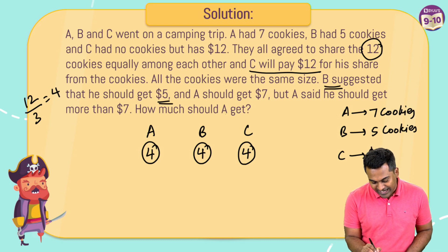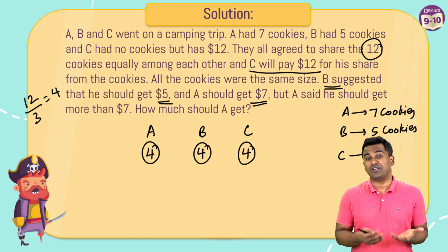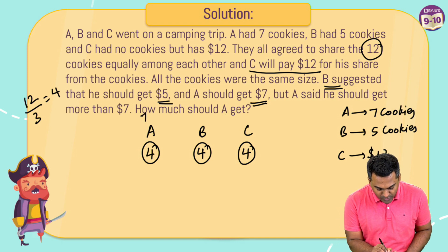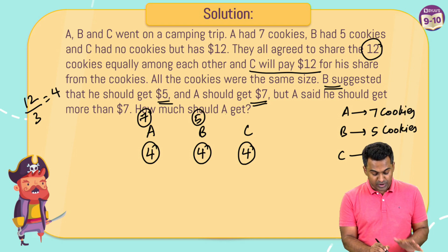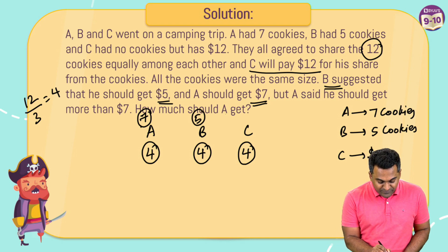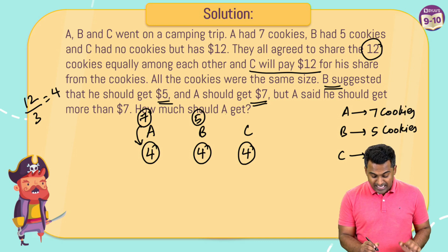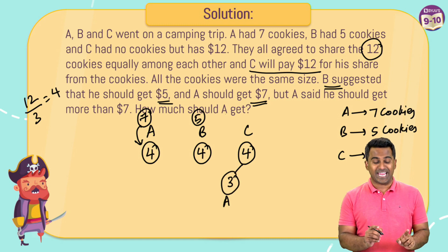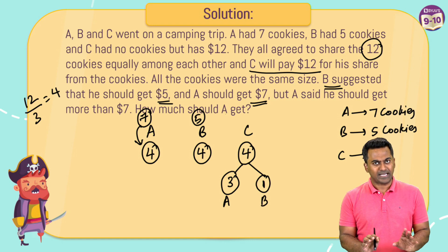A initially had seven cookies and B had five. Now after the distribution, A only kept four cookies, which means A contributed three cookies to C. The remaining one cookie that C received was given by B. So from C's four cookies: three came from A and one came from B.